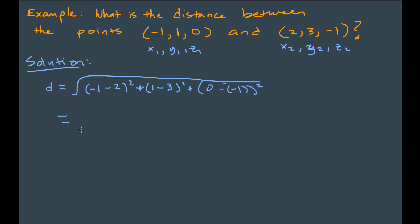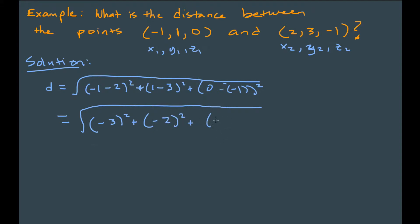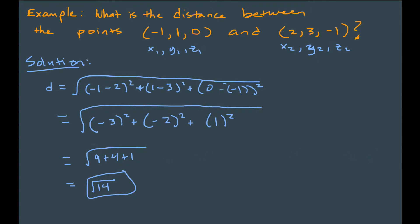That equals: negative 1 minus 2 is negative 3, squared gives 9; 1 minus 3 is negative 2, squared gives 4; and 0 minus negative 1 is 1, squared gives 1. So this is the square root of 9 plus 4 plus 1, which is the square root of 14. In a real-world application you'd want to know the units — meters, inches, feet, centimeters — but we won't worry about that here.